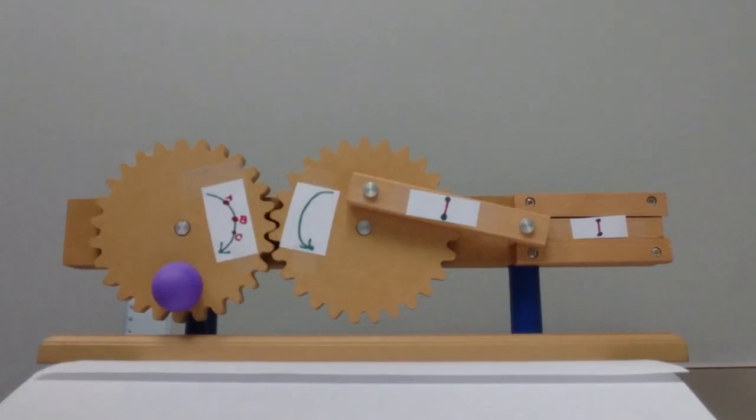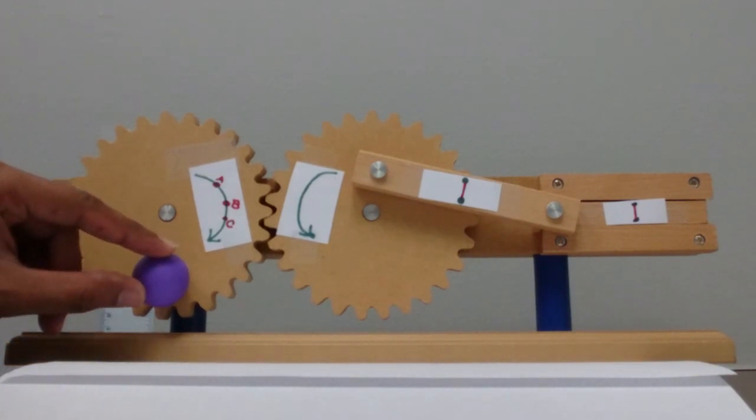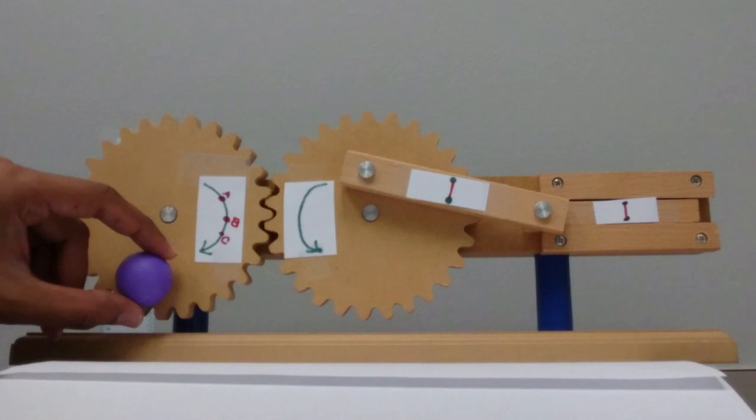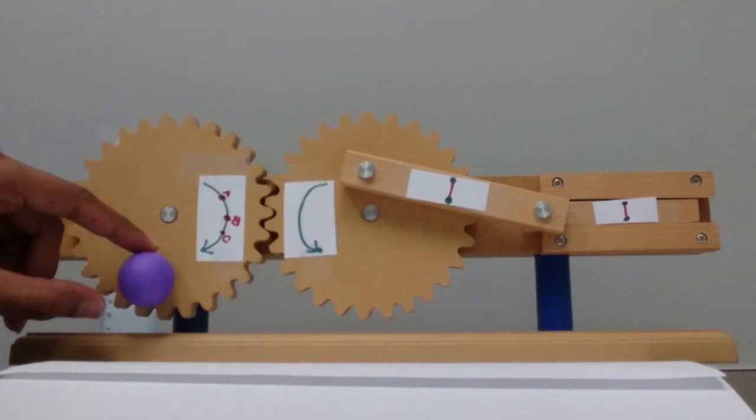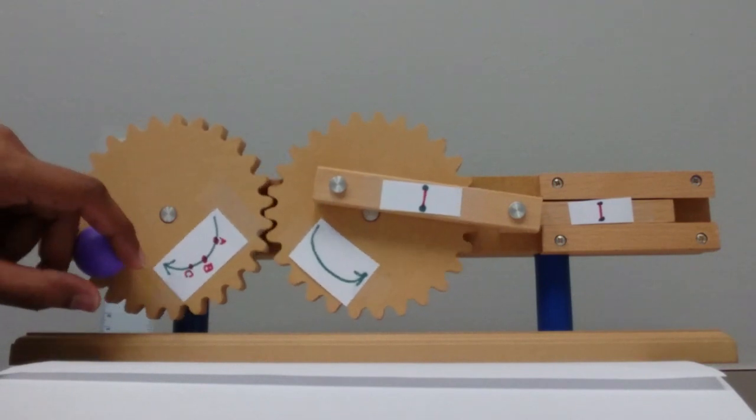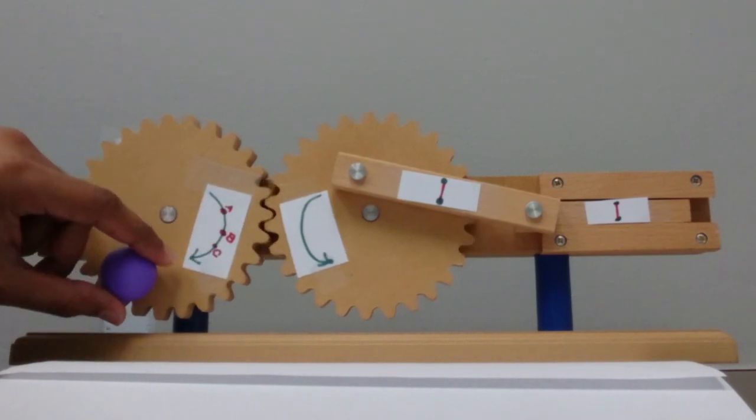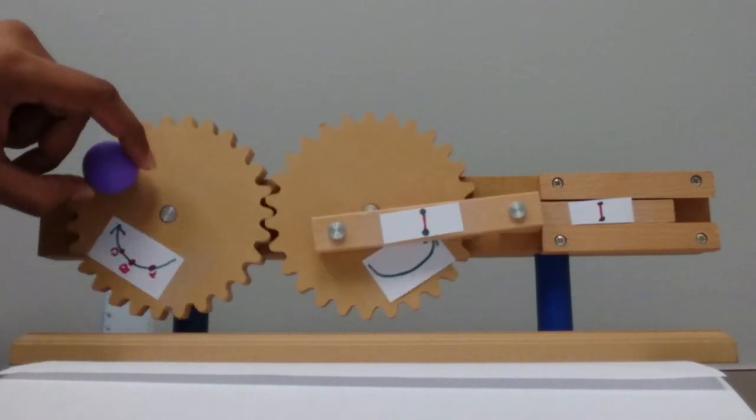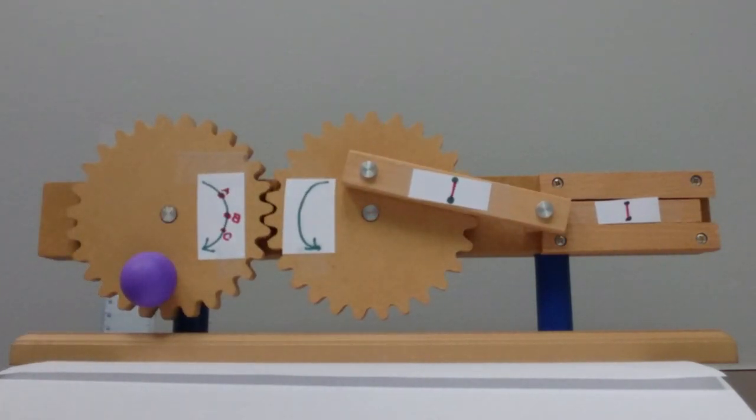So let's start with the easiest one, which is rotation about a fixed axis. So if I rotate this gear, you see the gear is rotating in this direction, and if I have points on the gear A, B, C, they are rotating about an axis.